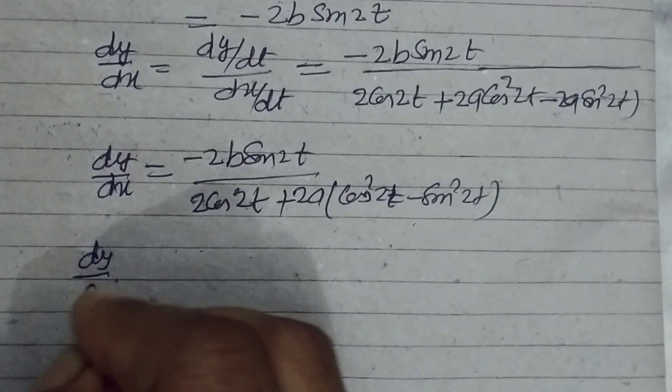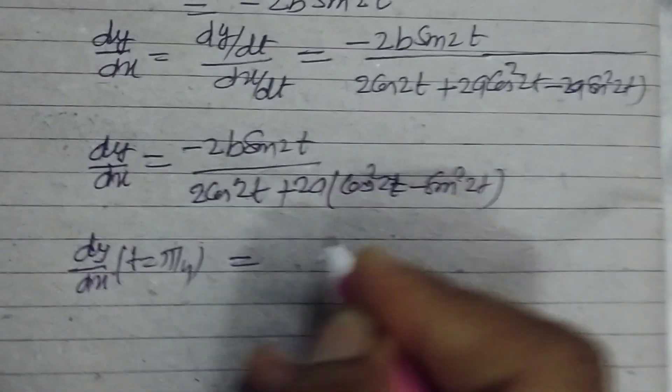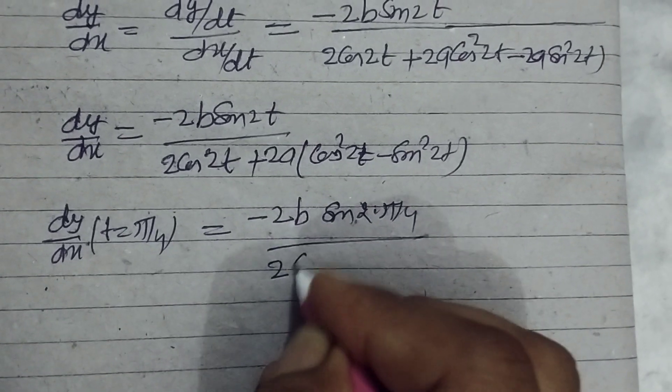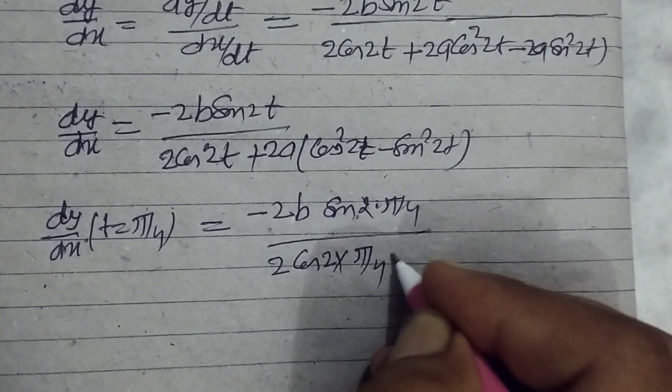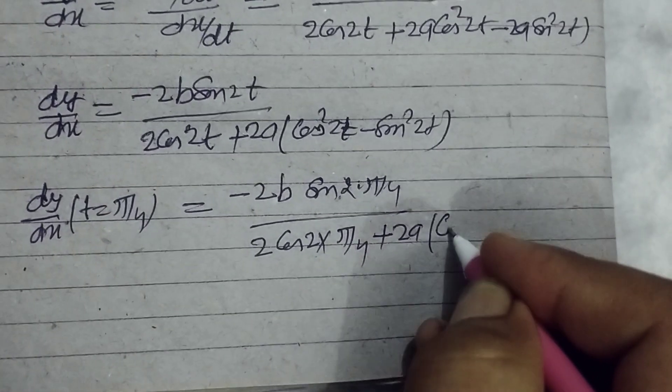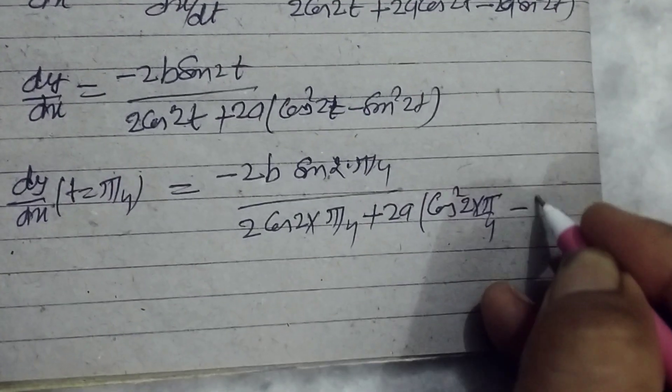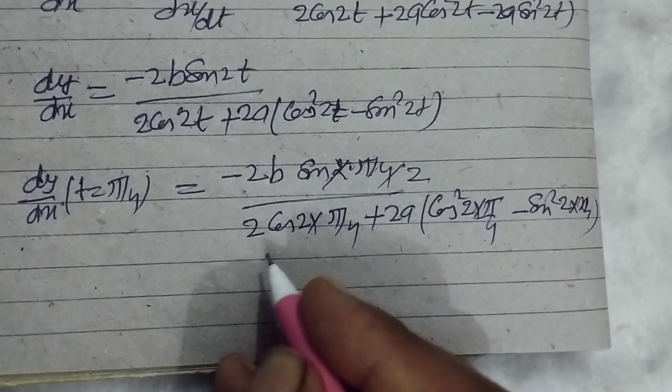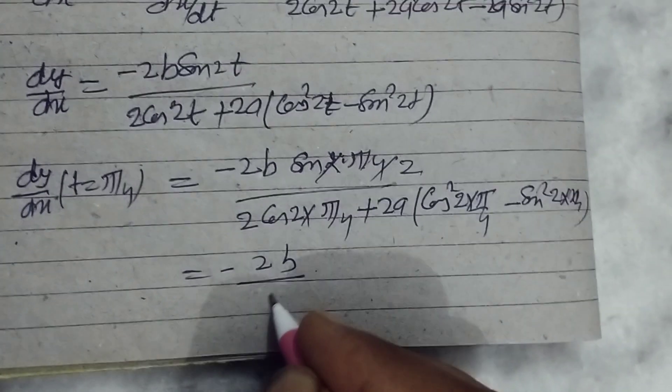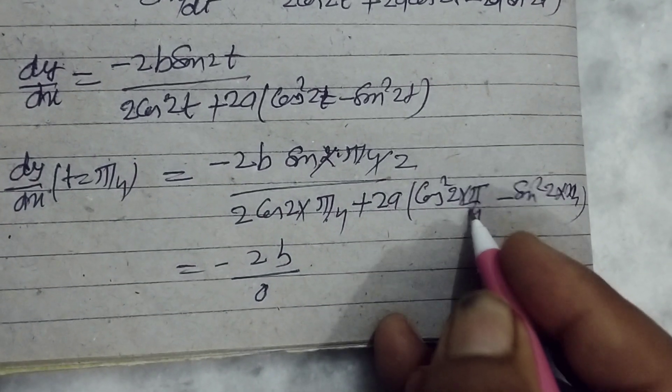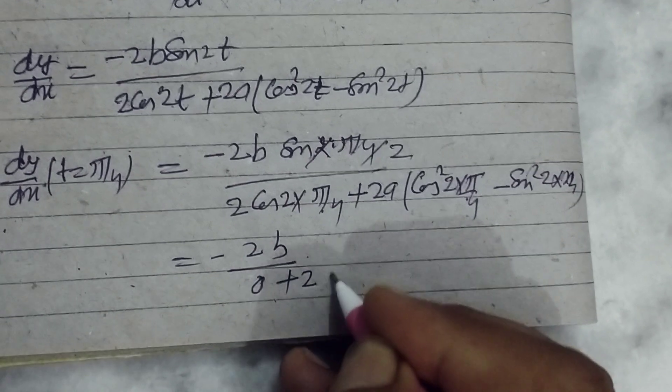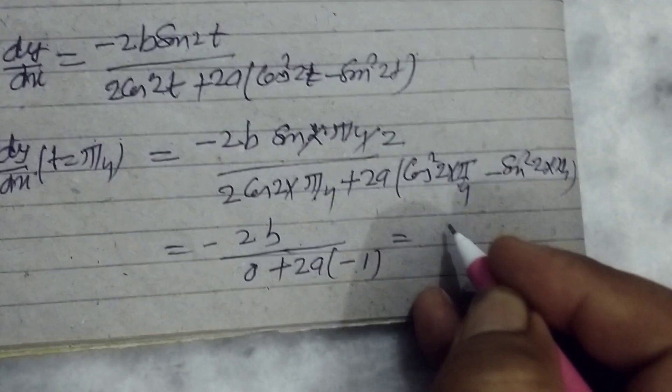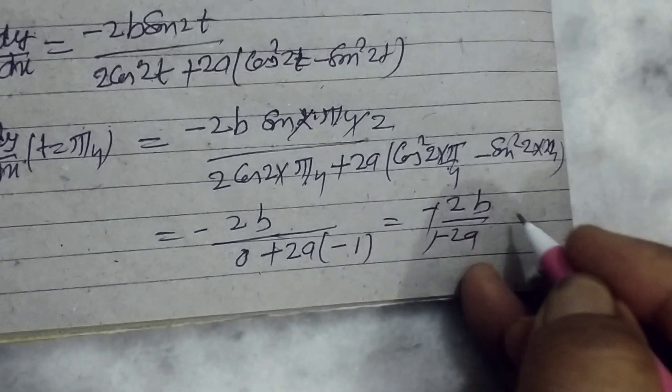The value of dy/dx at t = π/4: substituting 2t = π/2, sin(π/2) = 1 gives numerator -2b. In the denominator, cos(π/2) = 0 and cos²(π/2) = 0, sin²(π/2) = 1, so we get 2a(0 + 0 - 1) = -2a. Therefore dy/dx = -2b/(-2a) = b/a.